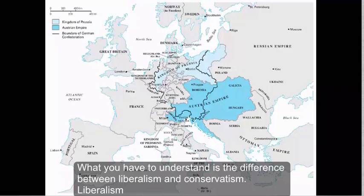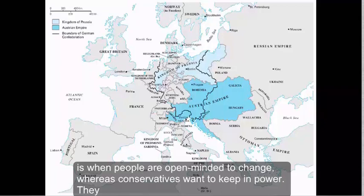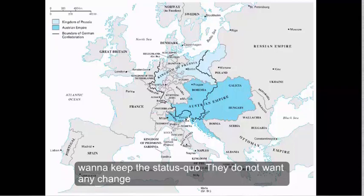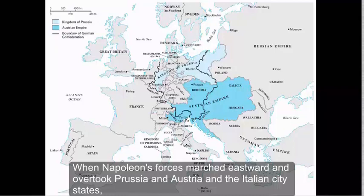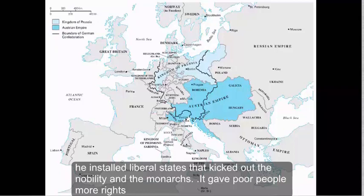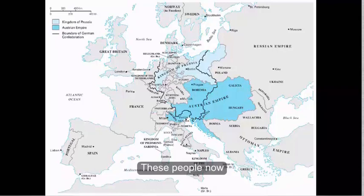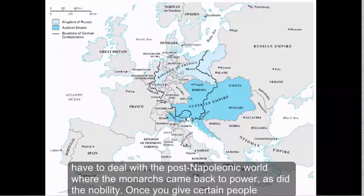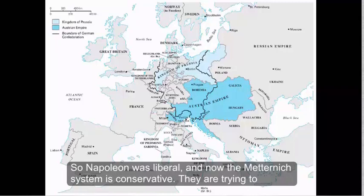This is a map of Europe in 1815. What you have to understand is the difference between liberalism and conservatism. Liberalism is when people are open-minded to change, whereas conservatives want to keep in power — they want to keep the status quo, they do not want any change. When Napoleon's forces marched eastward and overtook Prussia, Austria, and the Italian city-states, he installed liberal states that kicked out the nobility and the monarchs. It gave poor people more rights. These people now have to deal with the post-Napoleonic world where the monarchs and the nobility came back to power. Once you give certain people freedoms, it's very difficult to take them away.